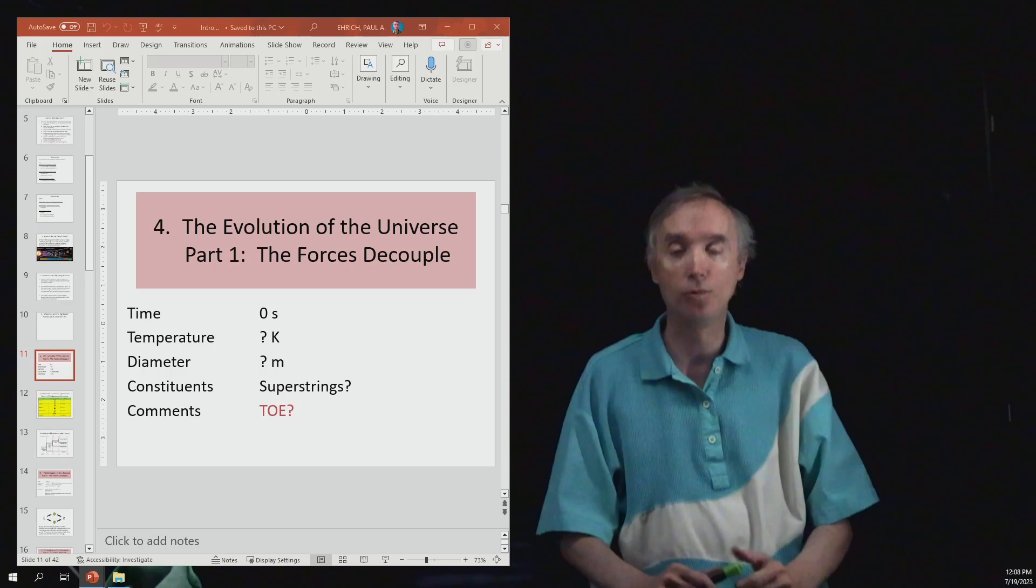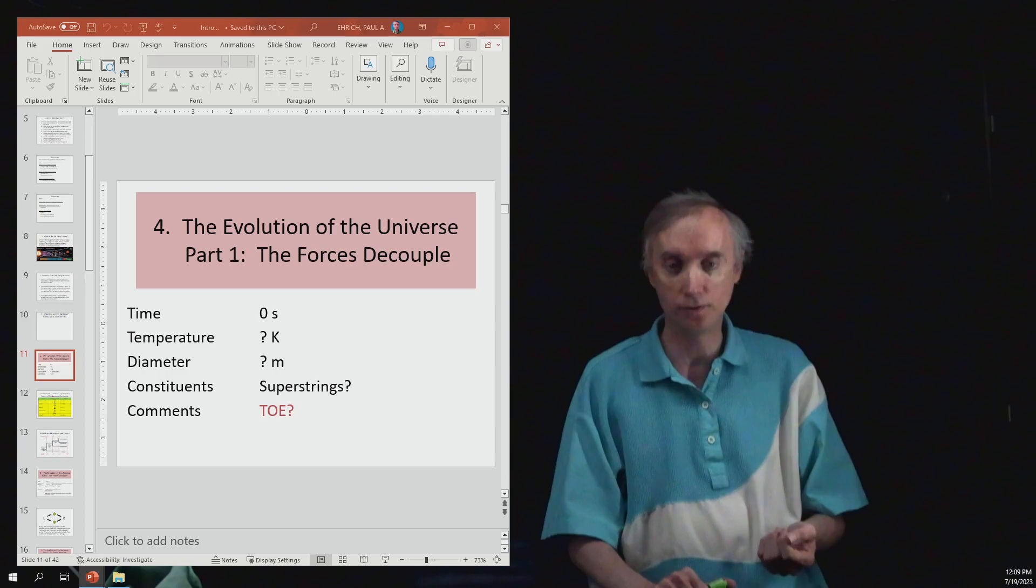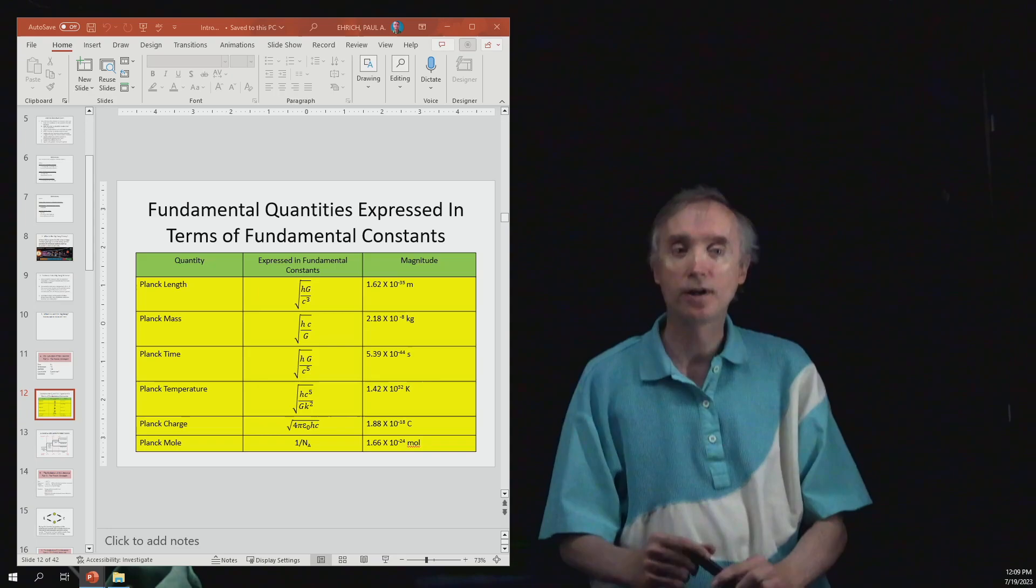Then what would have been the force that would have existed at this time in history? We don't know. But in our previous lesson, we talked about how the fundamental forces of the universe go together and that the ultimate force that we're looking for is ToE, the theory of everything. And then ToE is going to break apart into the four fundamental forces that we see today. So that's what we know at the instant that the Big Bang occurred. Not much.